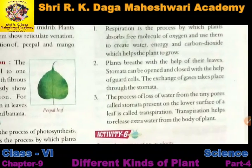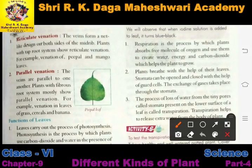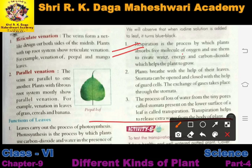Now we are going to study further. The next thing we are going to study is respiration. Respiration is the process by which plants absorb free molecules of oxygen and use them to create water, energy, and carbon dioxide, which help the plants to grow.